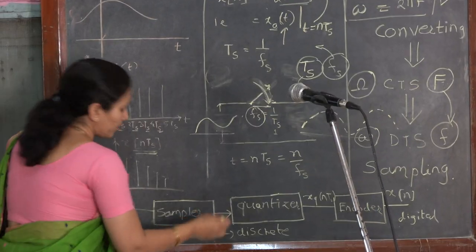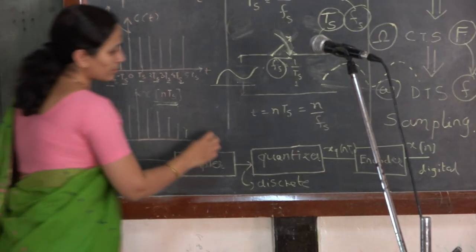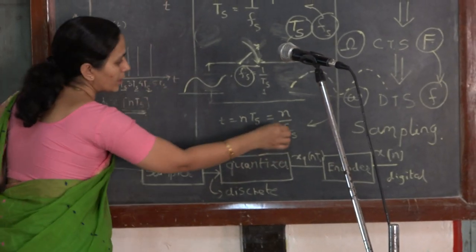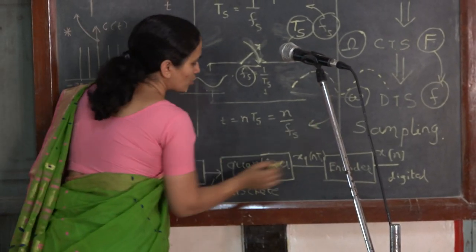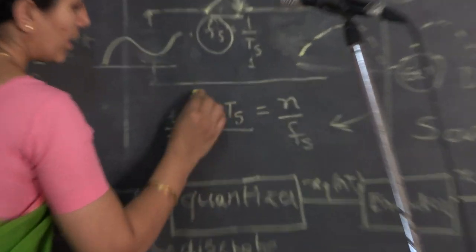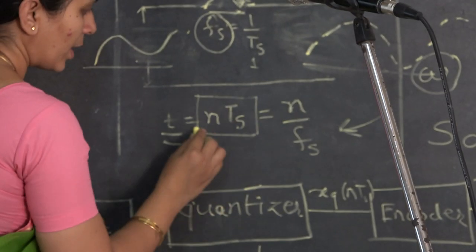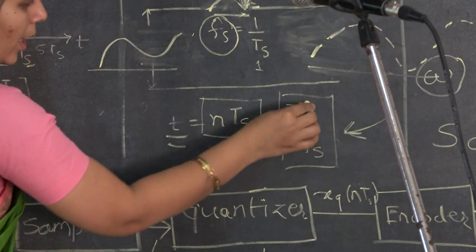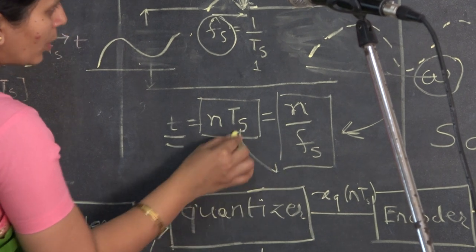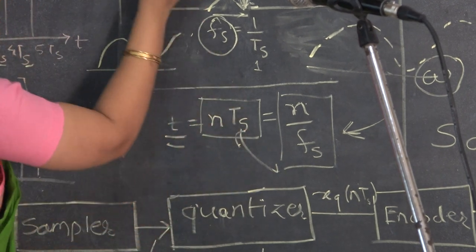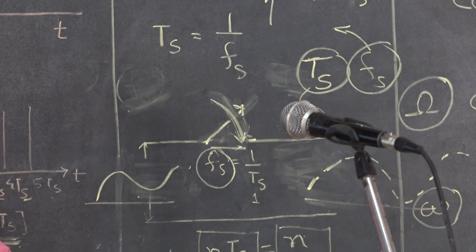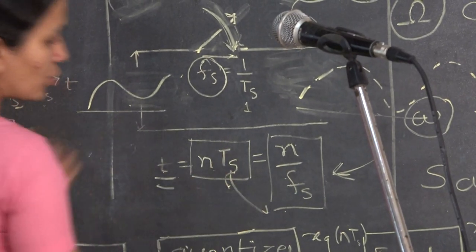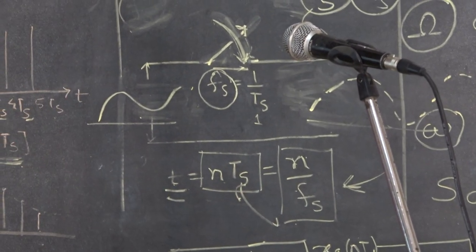Before moving forward, note that t equal to nTs can also be represented as t equal to n divided by fs, because Ts equals 1 divided by fs. That particular relation should also be kept in mind.